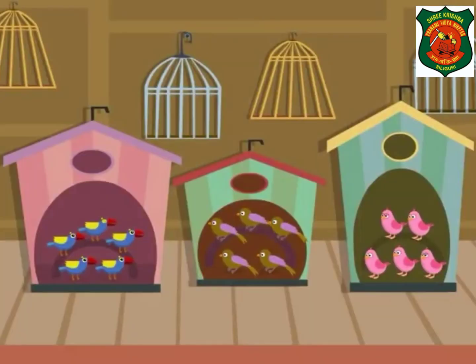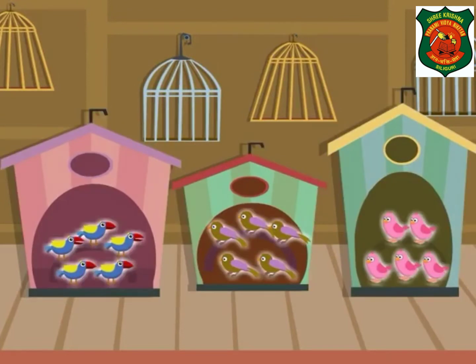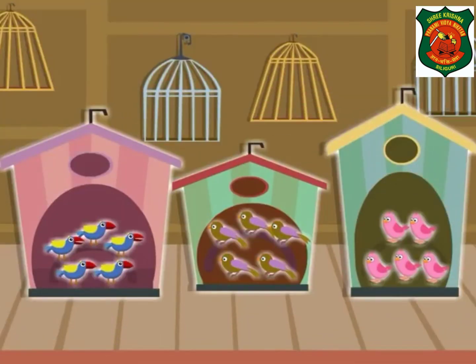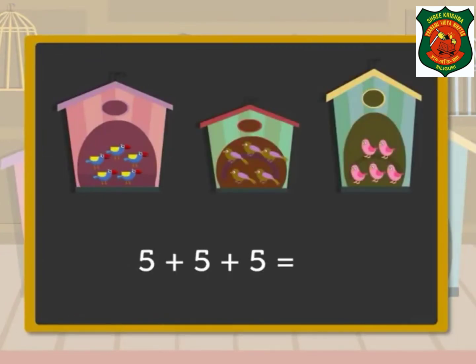Now look at another example. There are three bird houses, there are five birds in each bird house. How many birds are there in all? To get the total number of birds, we add the number of birds in all three bird houses: five plus five plus five is equal to fifteen. That is three times five is fifteen.